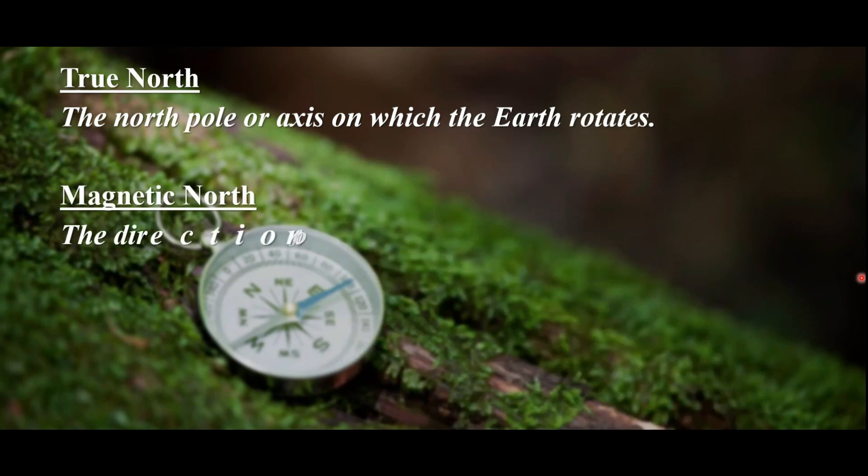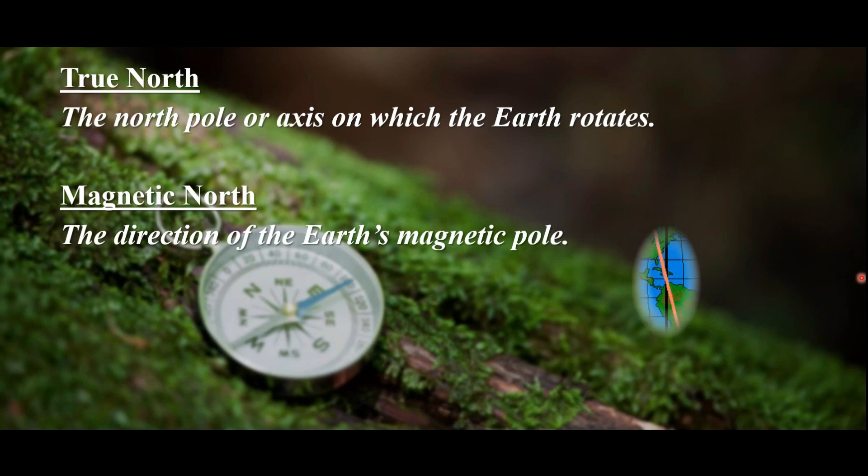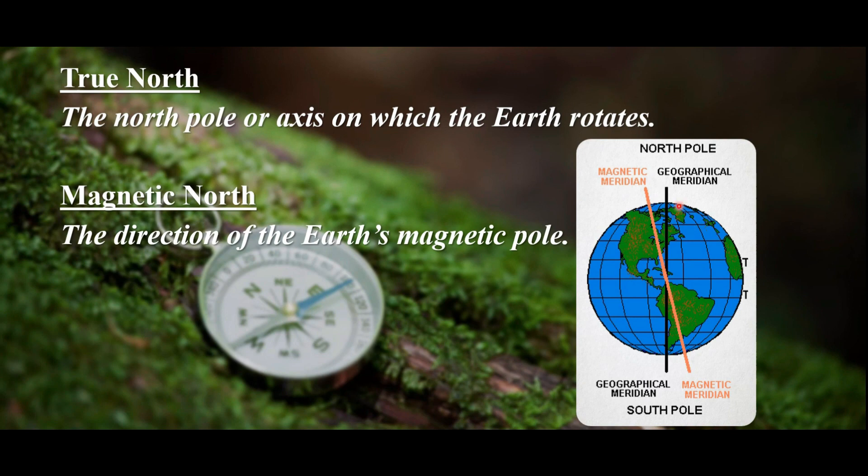Magnetic north. Magnetic north is the direction of the Earth's magnetic pole, which is right here. So the true north is right here up on top and true south is down here. But magnetic north is just a little off to the side. If there's magnetic north, there's magnetic south. So you have two main types of north.